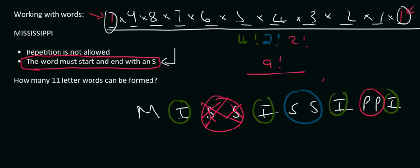So we had two S's left over, so we still included them at the bottom. So that's going to be 4 factorial times 2 factorial times 2 factorial. And if you work this out, you end up with 3,780.